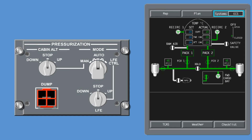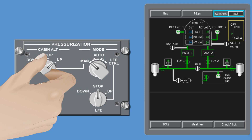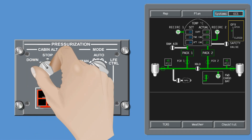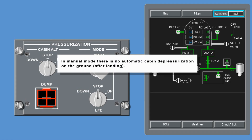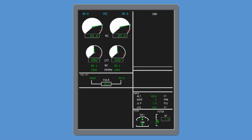Rotating the pressurization mode selector knob to the manual position allows manual control of the outflow valve. When manual mode is selected, both channels of the cabin pressure controller revert to standby state, but only one channel performs the manual operation. The channel selection is automatic. Note: in manual mode there is no automatic cabin depressurization on the ground after landing.